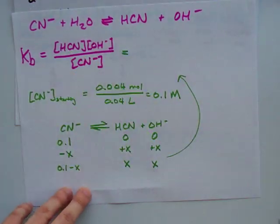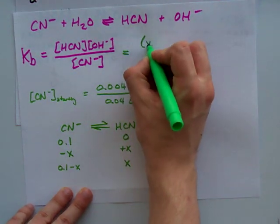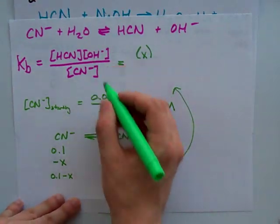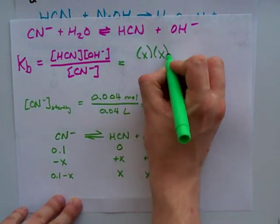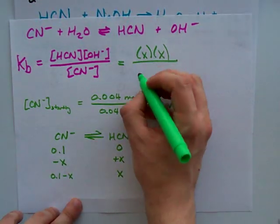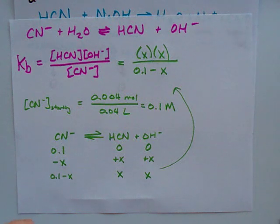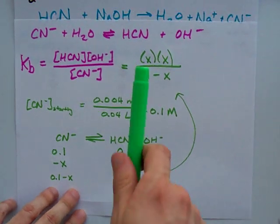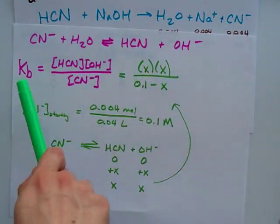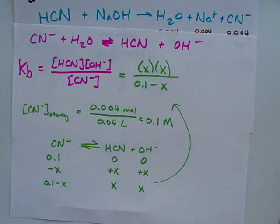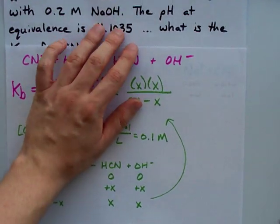My concentration of HCN at equilibrium is x, my concentration of OH at equilibrium is x, and my concentration of CN- is 0.1 minus x. The only problem is we don't know what x is and we need it to solve for Kb. This is where the pH at equivalence comes in.